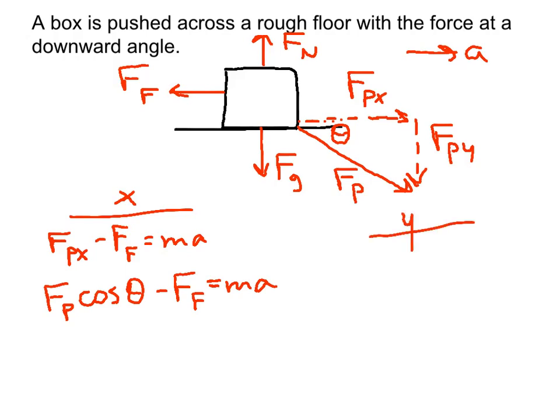In the Y direction, we're going to say there's no acceleration in the Y direction. So up equals down from equilibrium. So we can say FN equals FG plus FPY. This is up equals down. So FPY we'll have to substitute in for that. So we'll say FN equals FG plus FP sine theta. And we can plug stuff in, rearrange, solve for whatever we're looking for.